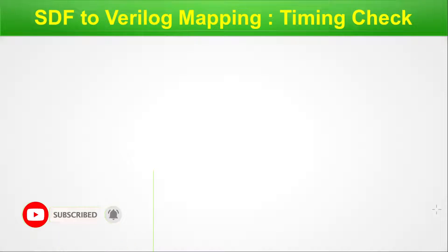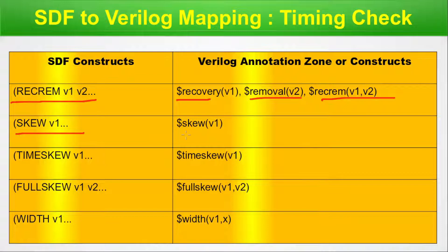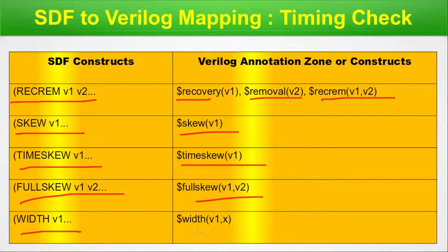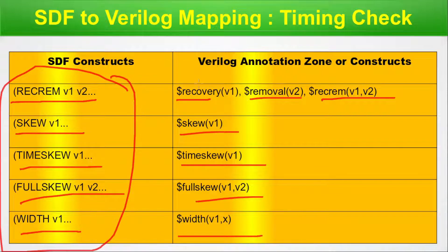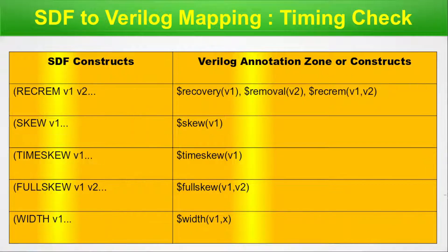Continuing the timing check mapping table: RECREM maps to $recrem for the recovery-removal combination. SKEW maps to $skew, TIMESKEW maps to $timeskew, FULLSKEW maps to $fullskew, and WIDTH maps to $width. All these SDF constructs can be easily back annotated through the corresponding predefined Verilog system tasks.